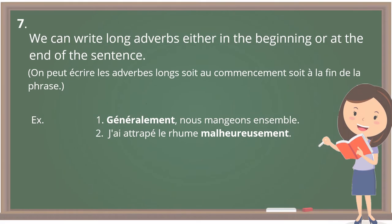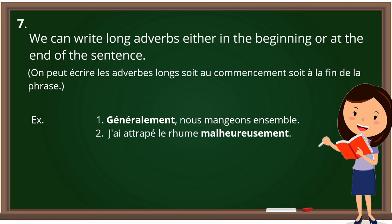Rule number seven is also related to placement. We can write long adverbs either at the beginning or at the end of the sentence. For example: 'Généralement, nous mangeons ensemble.' And: 'J'ai attrapé le rhume malheureusement.' Since 'malheureusement' is a long adverb, we can place it at the end.